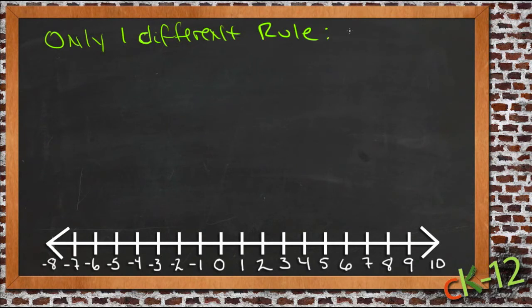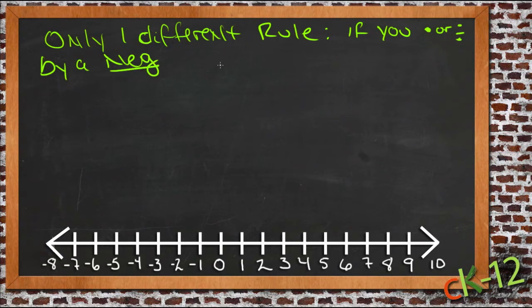And that rule is if you multiply or divide by a negative number, then you switch the sign. And that really is a lot simpler than it looks.